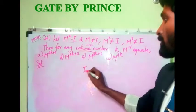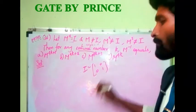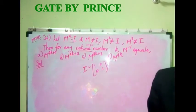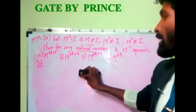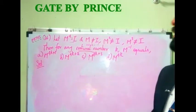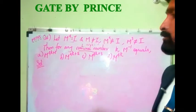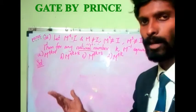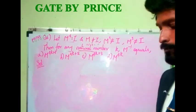I hope you all know the identity matrix — I for m means the 2×2 matrix with 1 0 / 0 1. So what they have asked: for any natural number k — natural number means 0, 1, 2, etc. going to infinity — what is the value of m inverse?